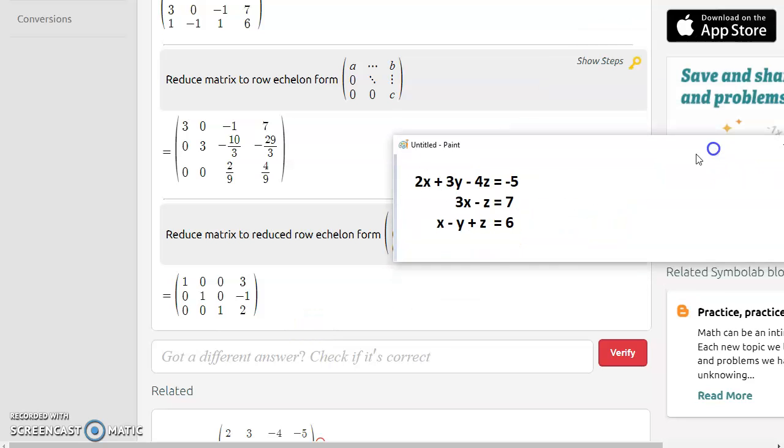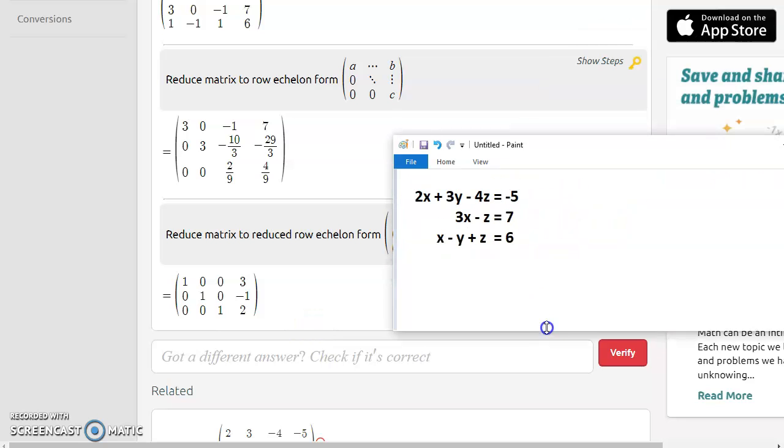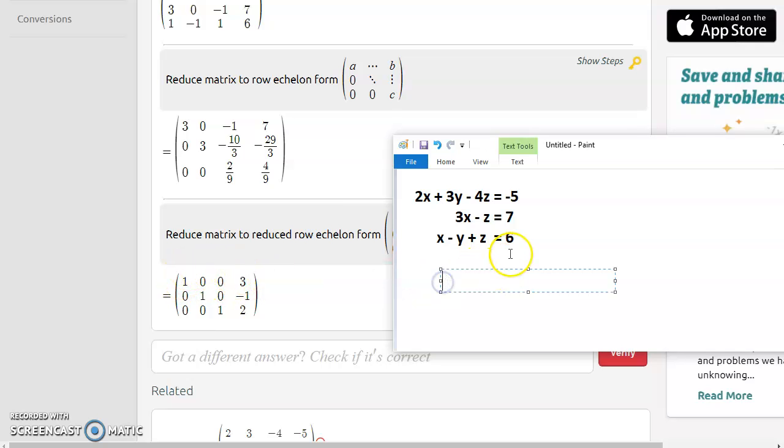Now, if you remember, the way that we read off that solution is the first column represents x's, then y's, then z's. This top row we would read as 1x equaling 3, or in other words, x equals 3. The second row, we'd have 1y equaling negative 1, so y equals negative 1. And in the bottom row, we have 1z equaling 2, so z equals 2. And there's the solution to our system.